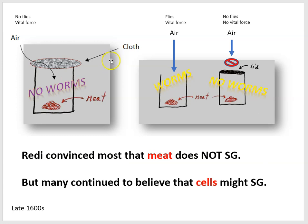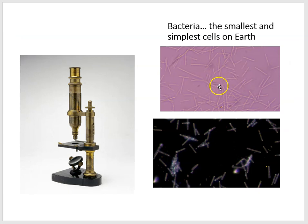While this type of experiment did convince many in the late 1600s that meat does not spontaneously generate into worms, many at the time still believed that cells might spontaneously generate — those tiny microbes recently discovered with microscopes. Bacteria are the smallest and simplest types of cells on Earth, and you need microscopes to observe them.